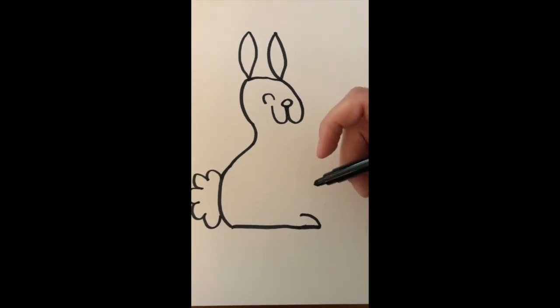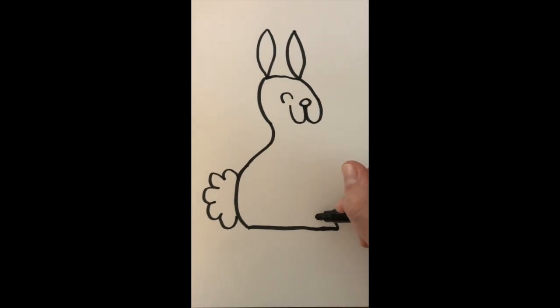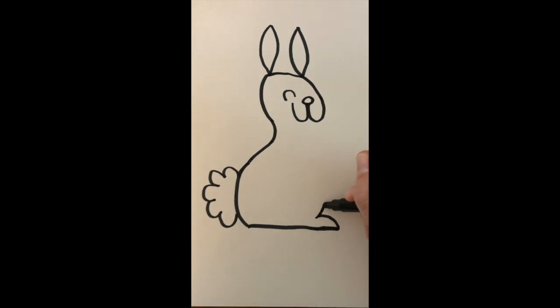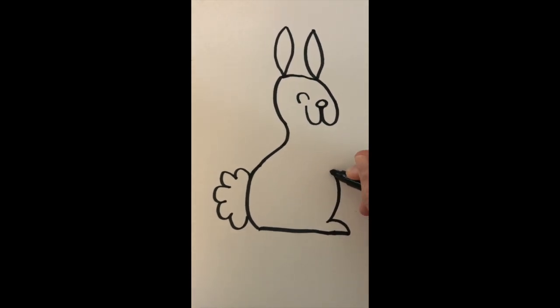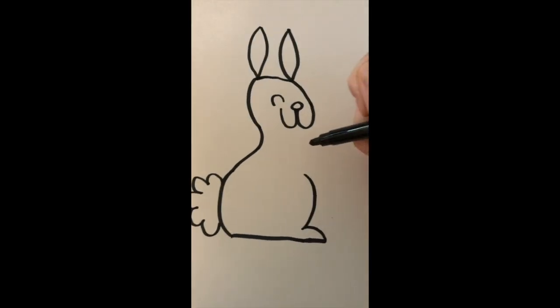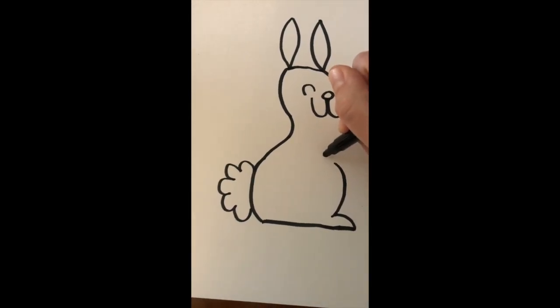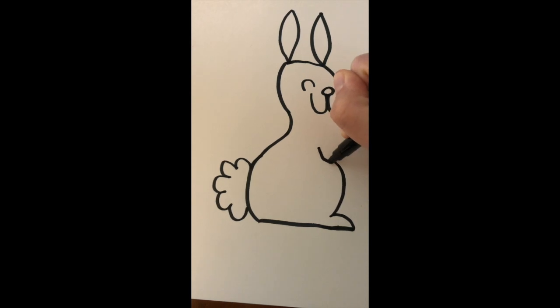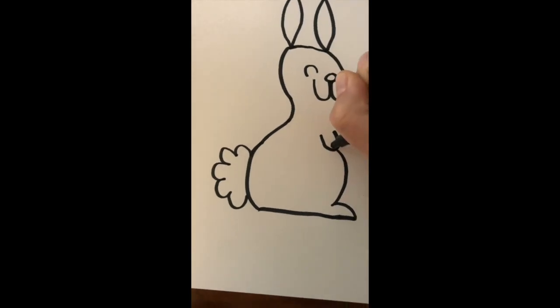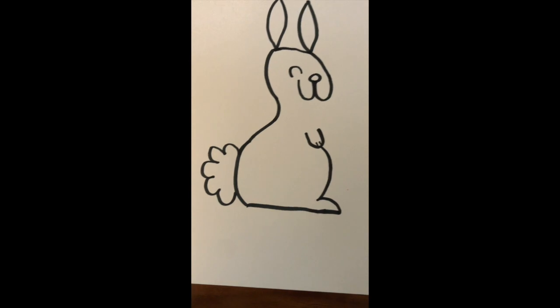Next, we get to make the bunny's belly. I'm going to start here at the foot and make a nice round curved line for his belly. I'm going to stop, and then make a U-shape right here to be his little paw and add two little lines on his paw.